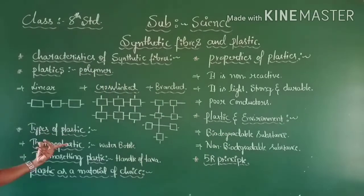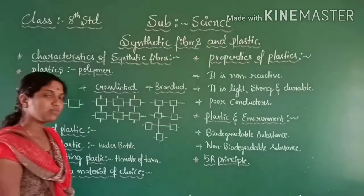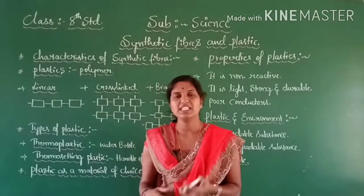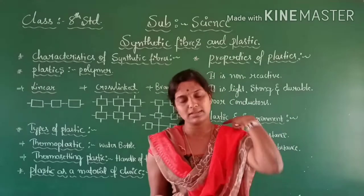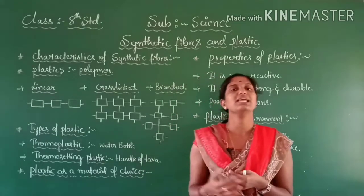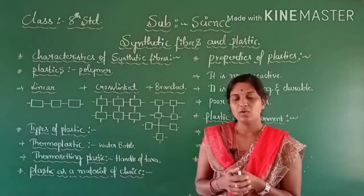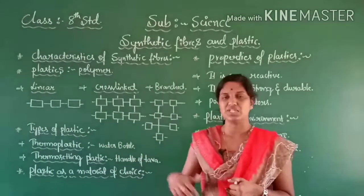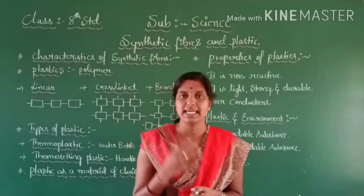Now let us look at the types of plastic. There are two different types: thermoplastic and thermosetting plastic. Thermoplastic means it is possible to change its shape by the expenditure of heat energy. When we apply heat to that plastic article, there will be a change in the shape of that plastic material.